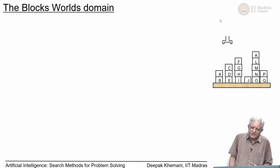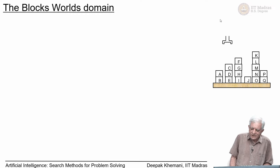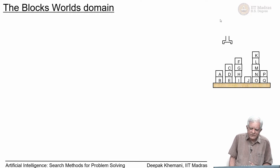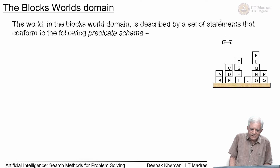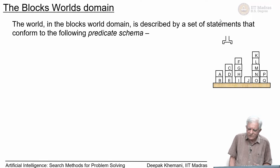The STRIPS planner written at SRI was in the Blocks world domain, and we have already seen a glimpse of what the Blocks world domain is like, so let us quickly recap that. This is what a state in a Blocks world domain looks like — it is described by a set of statements that conform to the following predicate schema.